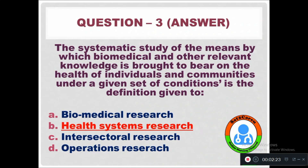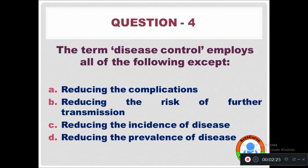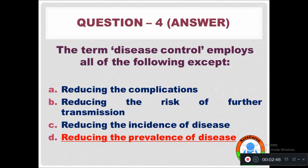Question 4: The term 'disease control' employs all of the following except — Option A: Reducing the complications. Option B: Reducing the risk of further transmission. Option C: Reducing the incidence of disease. Option D: Reducing the prevalence of disease. The right answer is Option D. Reducing the prevalence of disease is known as disease control.